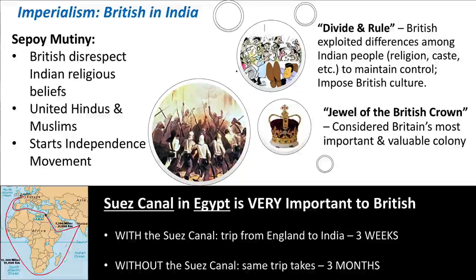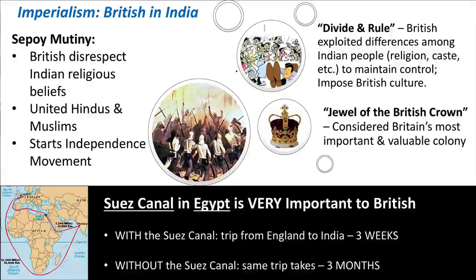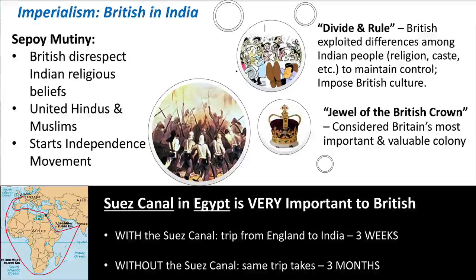India also has a very large population, so that's a lot of people buying British goods. One of the main British goods was textiles — they had opened a lot of textile mills in England. Before the industrial revolution, India had actually been one of the largest textile manufacturers. So when England imperialized India, not only did they force the Indian people to buy British cloth, they also taxed Indian industries to make sure the Indian businesses went out of business — basically wiping out their greatest competitor. That's one reason why India made England so much money as a colony.